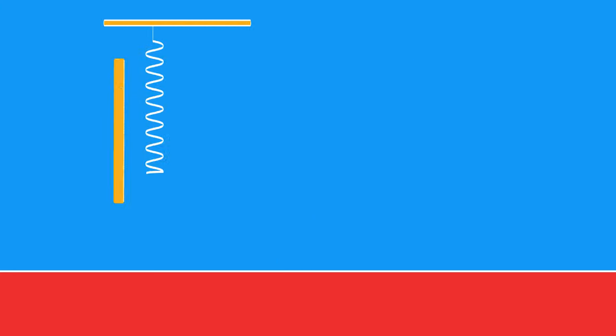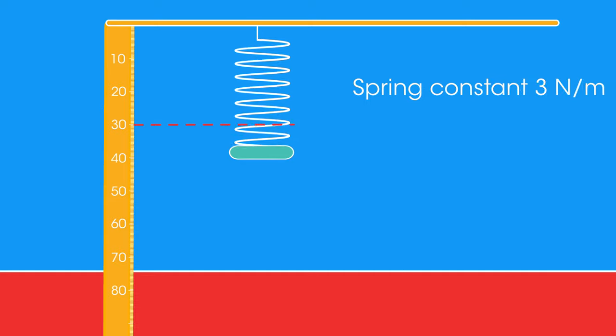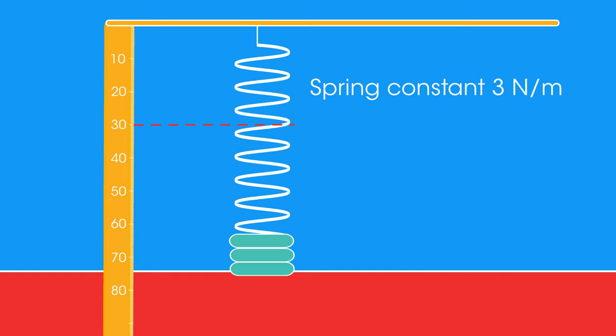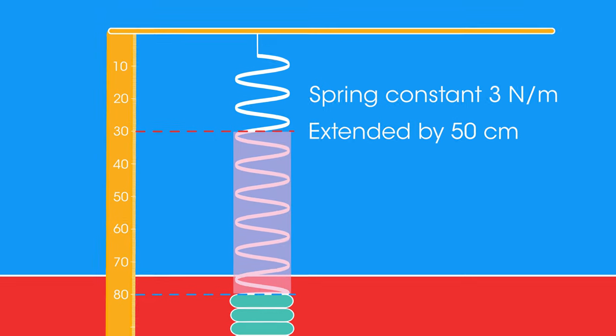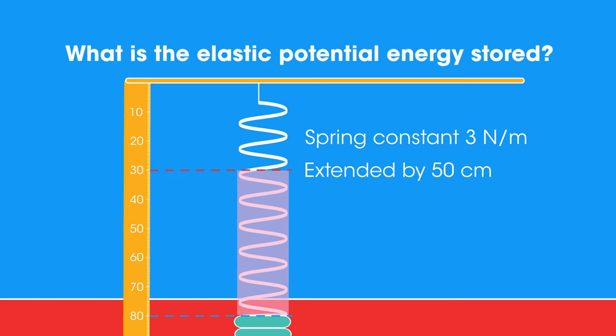Let's try applying this. A spring is stretched. It has a spring constant of 3 newtons per metre. It's extended by 50 centimetres. What is the elastic potential energy stored by the spring? Pause the video while you work it out.